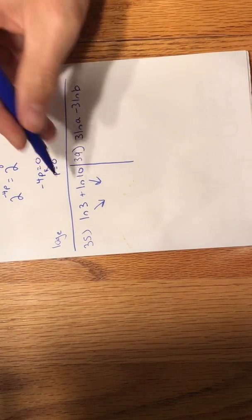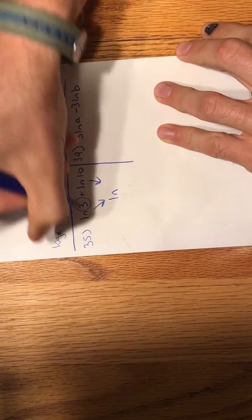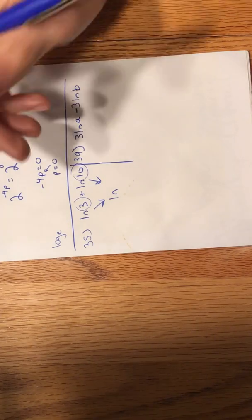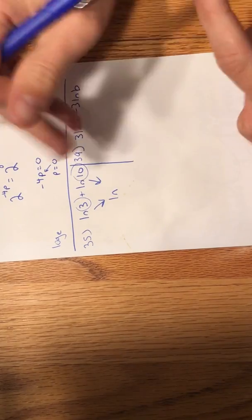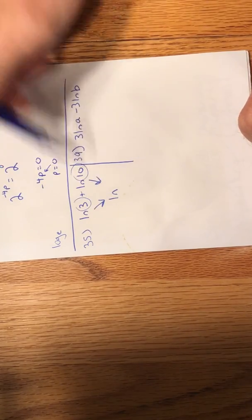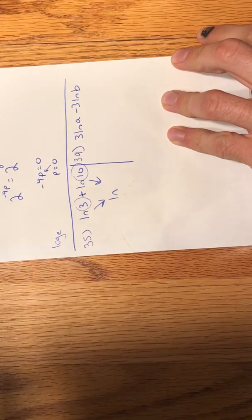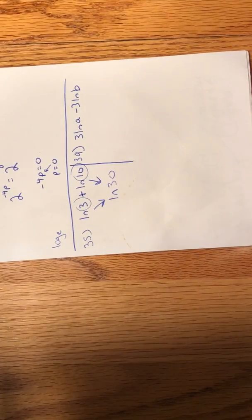So when you're adding two identical logs together, we can condense that into just one log. And we do that by taking the two numbers that are being taken by the log or the natural log, and we either divide them or we multiply them in the order they're written. So because we're adding the two together, we would multiply 3 and 10 to get 30. So the condensed version of that expression would just be the natural log of 30. And that's your final answer.